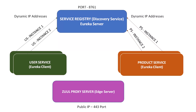Now assume a request is coming from the client to access the user service or product service. Whenever the request comes from the client, the Zuul proxy server will send a request to the service registry to get the IP addresses of the user service. The service registry returns the list of available IP addresses of user service instances registered in the Eureka server. The Zuul proxy server then does load balancing and sends the request to the respective user service and gets the response.